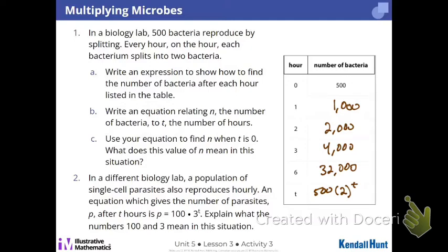So 500 times 2 to the T will give me total number of bacteria. So as an equation, N equals. So follow my equation again, situationally. Total number of bacteria is equal to the 500 I start with. And I'm going to double them T times.